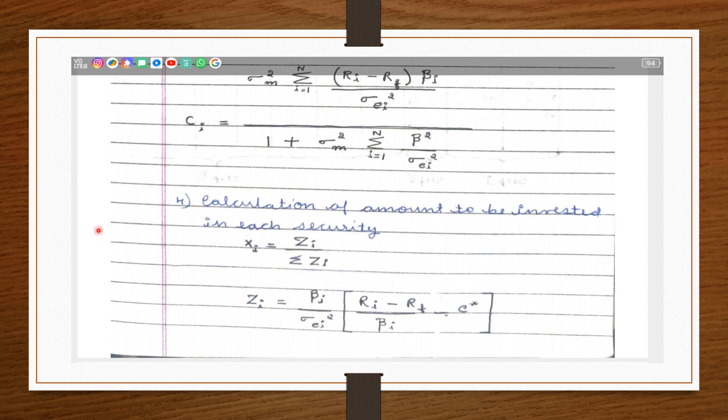Xi is equal to beta i upon sigma Ei square into Ri minus Rf upon beta i minus C. Here C asterisk is the cutoff point.